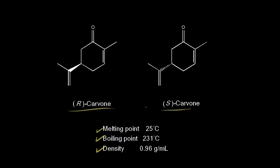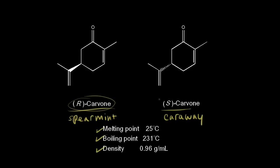However, there are a few important differences. R-carvone is the major component of spearmint oil, so R-carvone smells like spearmint. S-carvone is the major component of caraway oil, and this smells like caraway. It's pretty amazing that our noses can tell the difference between these two enantiomers. The science of smell is a really fascinating topic.